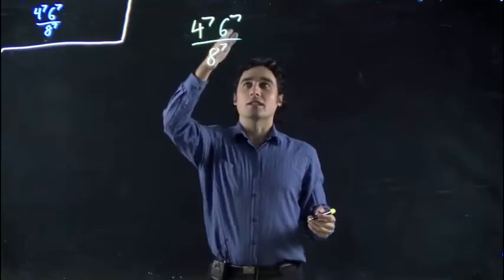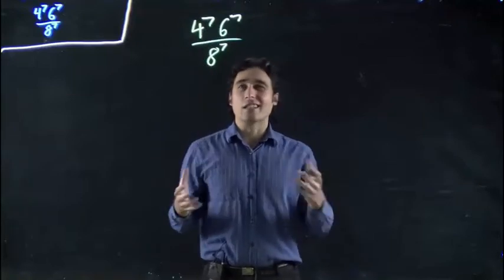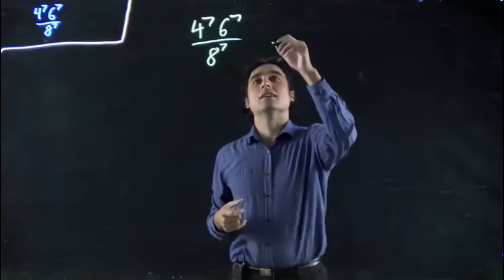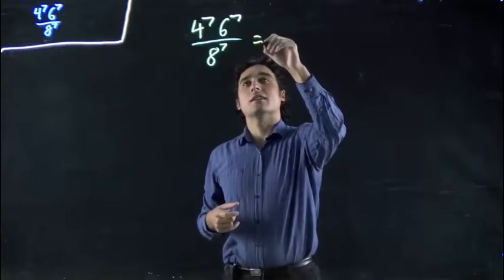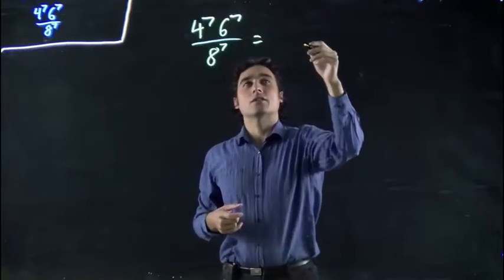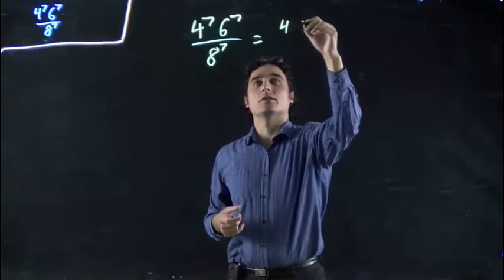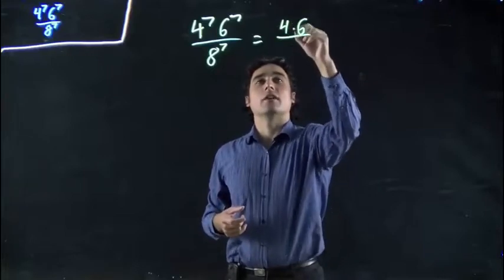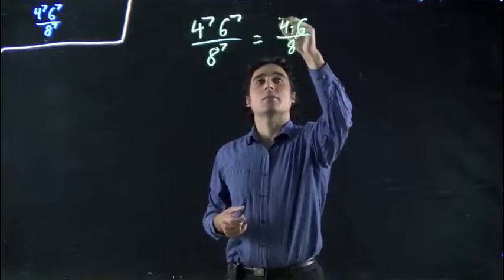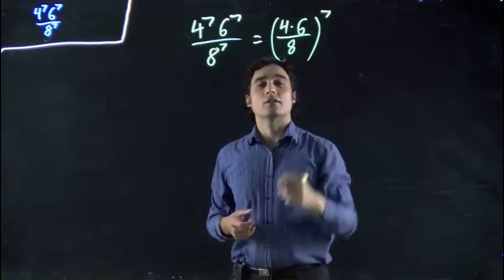So right now again 4 to the 7, 6 to the 7, 8 to the 7, we can't really combine those easily, but we can think if this is everything to the power of 7, that's the same as if I pull that out. And what do I mean by that? Well I've got 4 times 6 on top, 8 on the bottom, and all of that to the power of 7.